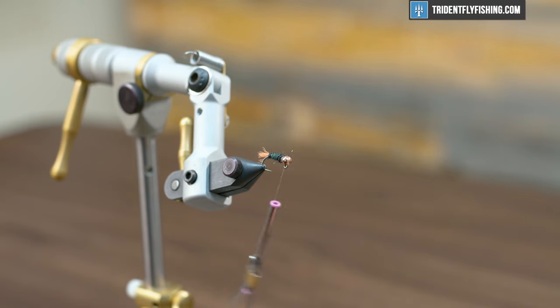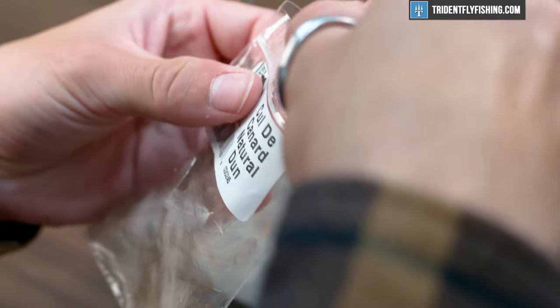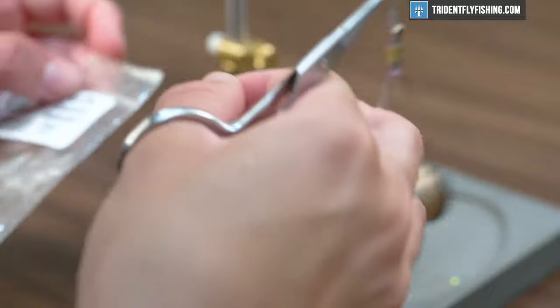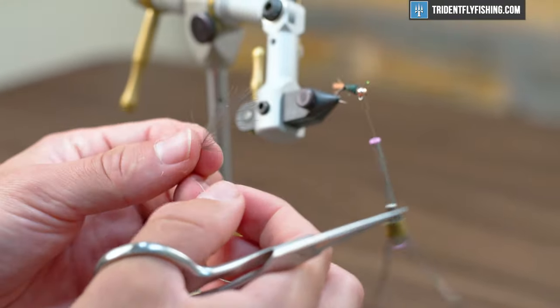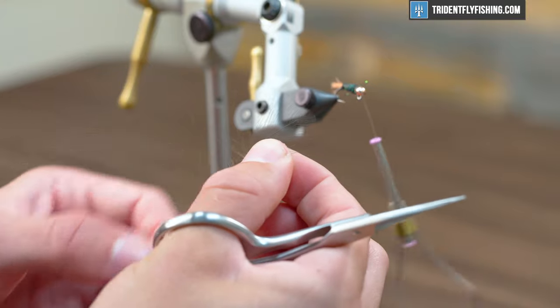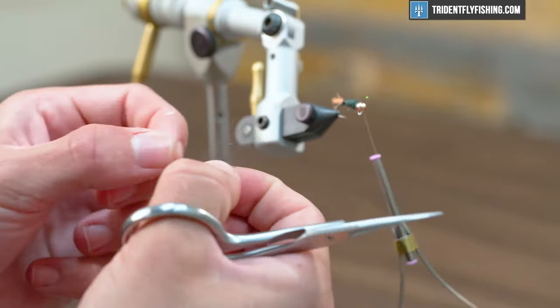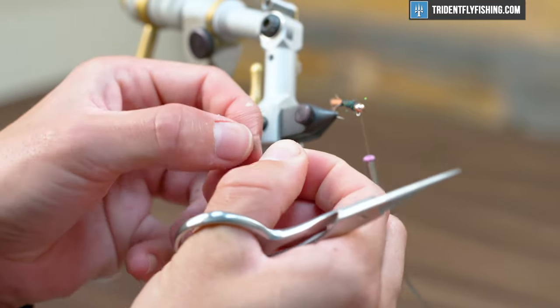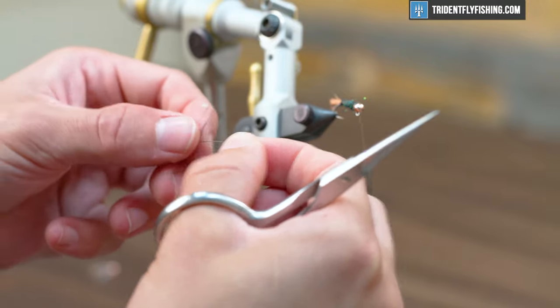Now we're going to move into some CDC. This is the color natural dun. Any earthy color is going to do fine for this fly. We're going to wrap it like a soft hackle. Get in there and you'll see these long fibers down here at the bottom. Just get rid of those on either side. Then we're going to grab it at the tip and just sweep these fibers rearward.